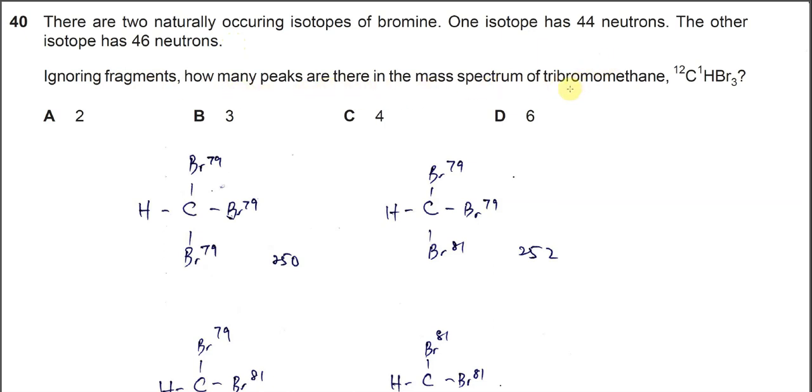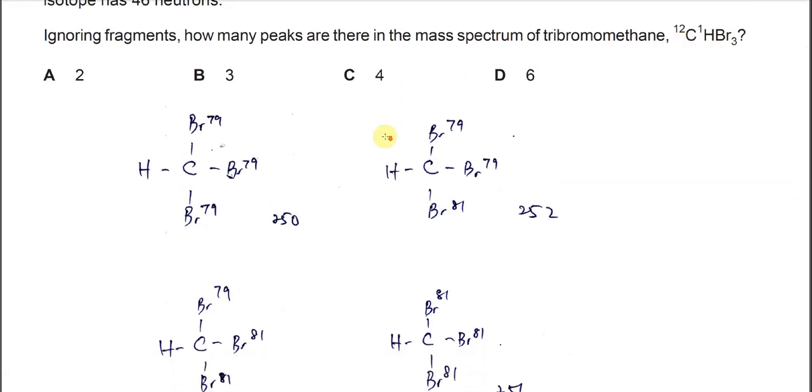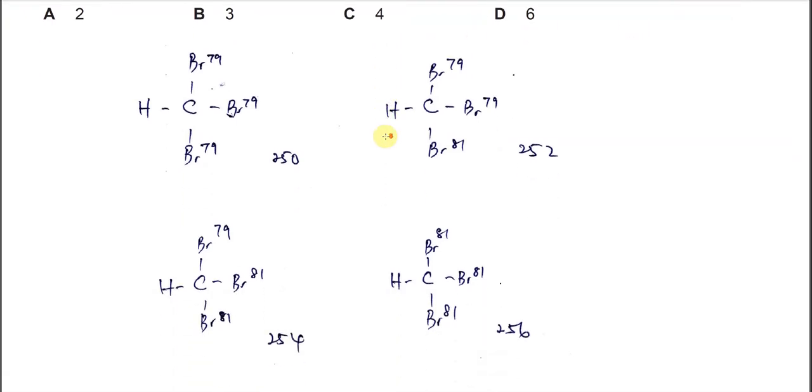When there is tribromomethane, we know that in this molecule it has three bromine atoms. Therefore, the possible arrangement or possible isotopes inside this molecule - first it will be all the bromine with 79 mass.